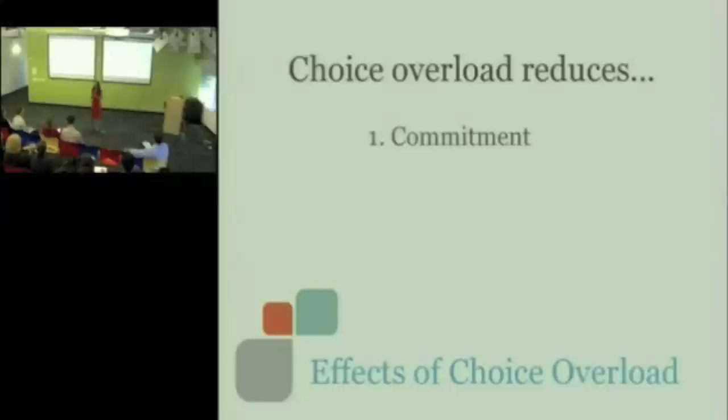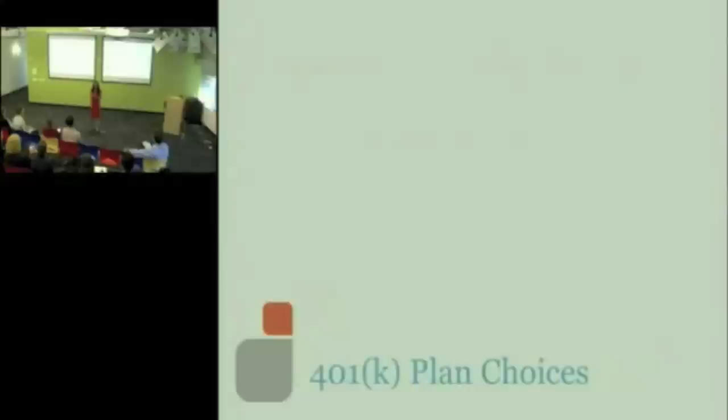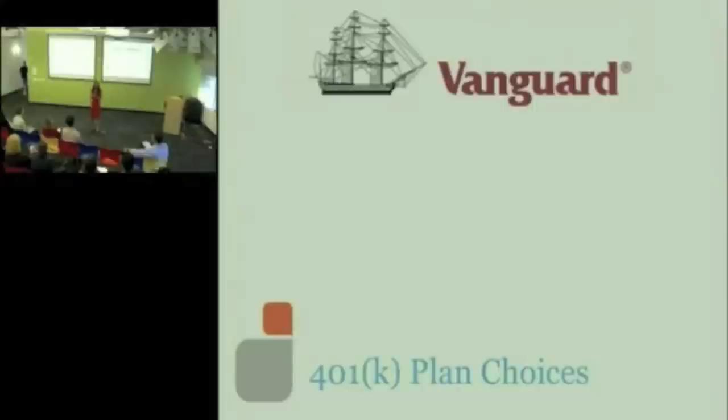The problem is that we delay and procrastinate even when it goes against our best self-interest. So, I'm going to give you one case of a situation where clearly we should not be delaying or procrastinating. At least most of us would agree with that. Let's take the case of retirement savings decisions. I had an opportunity to do a project with Vanguard. We looked at 800,000 Americans from 657 institutions drawn from 64 different industries.